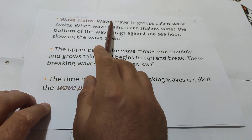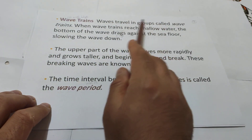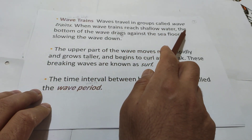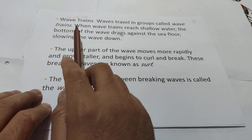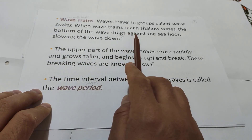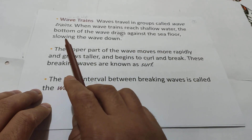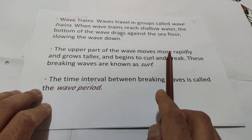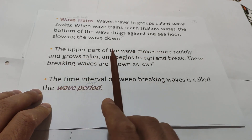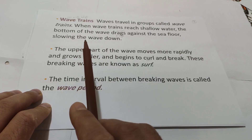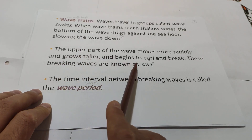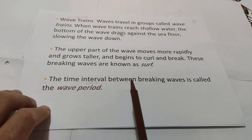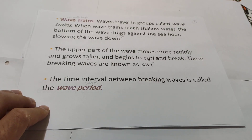Waves travel in a group called wave trains. When a wave train reaches shallow water, the bottom of the wave drags against the sea floor, slowing the wave down. The upper part of the wave moves more rapidly, grows taller, and begins to curl and break. These breaking waves are known as surf. The time interval between breaking waves is called the wave period.